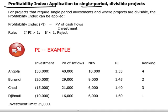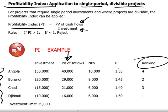Let's assume that we have single period investments and that the projects are divisible — in other words, we can invest in fractions of a project. The profitability index is taking the present value of the cash flows generated from a project — the column showing present value of cash inflows — divided by the investment. We want to rank our various investments by the highest PI, profitability index.